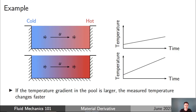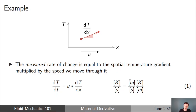We can bring these ideas together with a very simple equation. The measured rate of change of temperature — the gradient seen on the sensor's screen as we move it through the pool — turns out to equal the spatial temperature gradient dT/dx multiplied by the speed u we move through the pool. You can verify this by checking the units: dT/dt has units of kelvins per second, equal to velocity in meters per second multiplied by the spatial gradient in kelvin per meter.